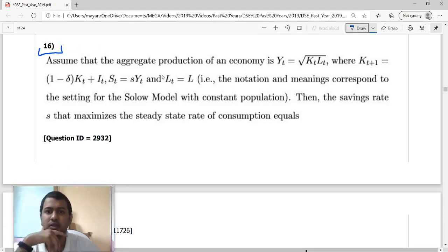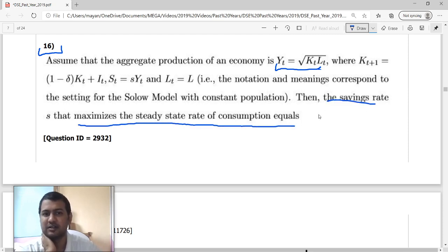Question number 16. You have production function like this: Kt root KtLt, everything is standard Solow model. We have to find the savings rate that maximizes the steady state rate of consumption. Basically, we have to find the golden rule level of savings.